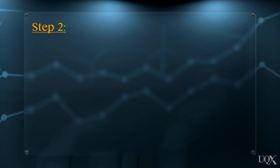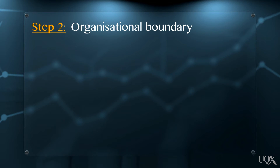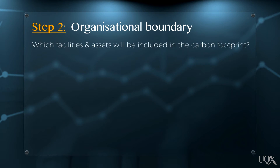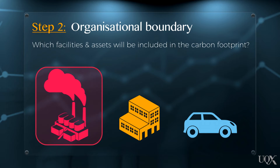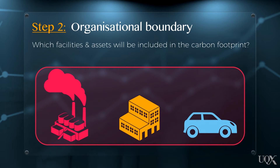Step two is drawing the organisational boundary. This involves determining which facilities and assets within an organisation you should develop the carbon footprint for. For example, an organisation may have a power plant, a separate administration building, and a vehicle fleet. You might need to include just one, or it might be many. Generally, you calculate the emissions from each of these facilities individually and then add them together to get a carbon footprint figure for the whole organisation.